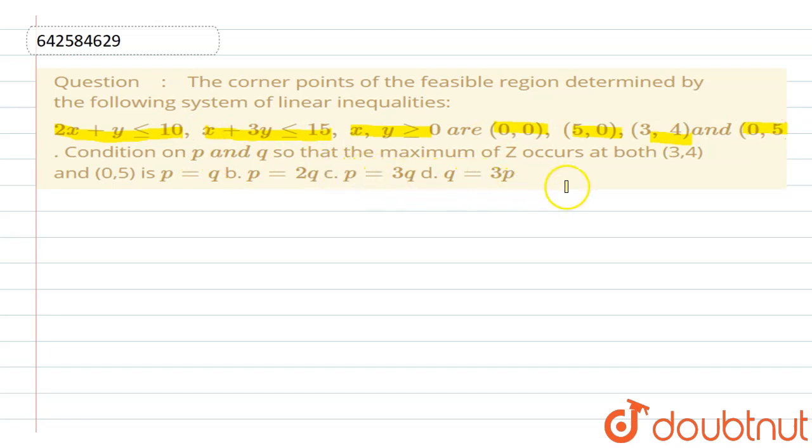Condition on P and Q so that maximum of Z occurs at both (3,4) and (0,5). Then P is equal to... then we have to find the condition.